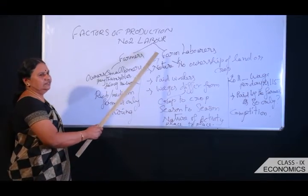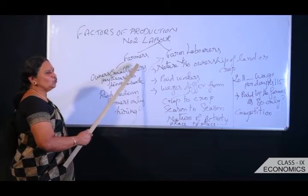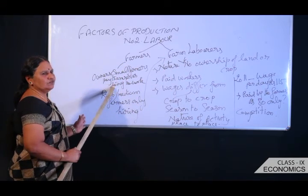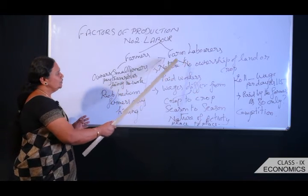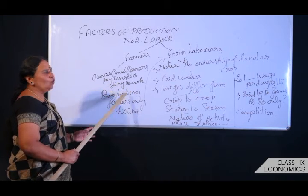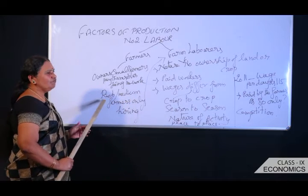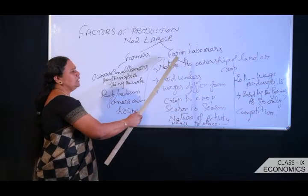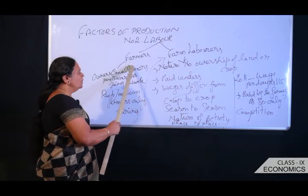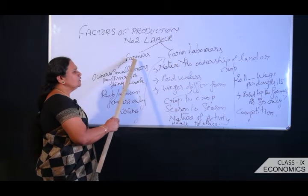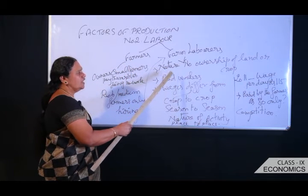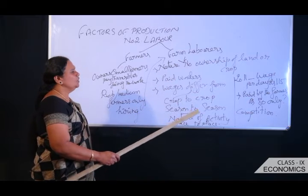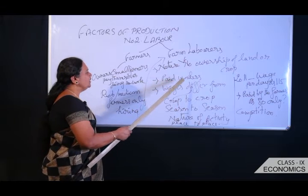We broadly have two types of people: farmers and hired workers. Small farmers do the work themselves or with family members and have no need to engage farm laborers. Rich and medium farmers hire laborers — these are called farm laborers. Farmers own the land and the crop, but farm laborers have no right over either the land or the crop; they only receive a wage, so we call them paid workers.